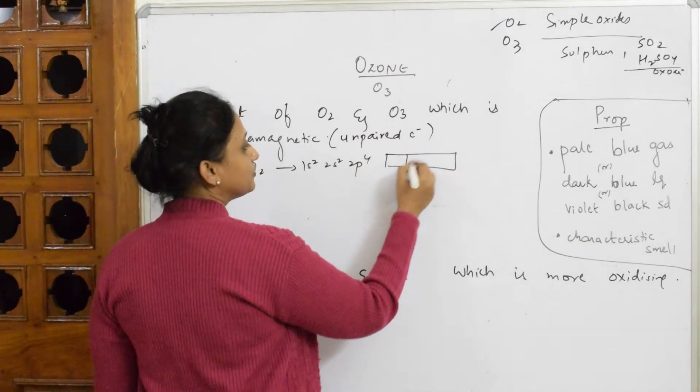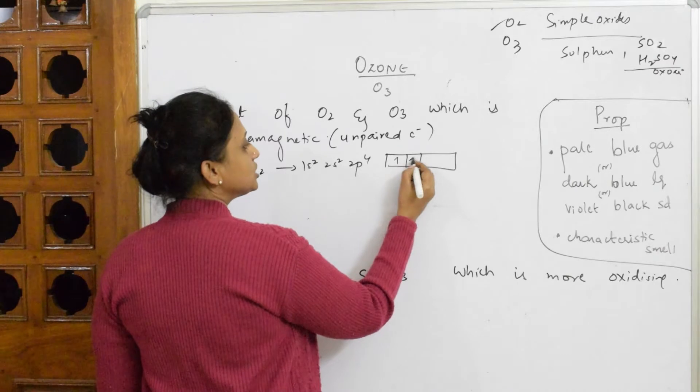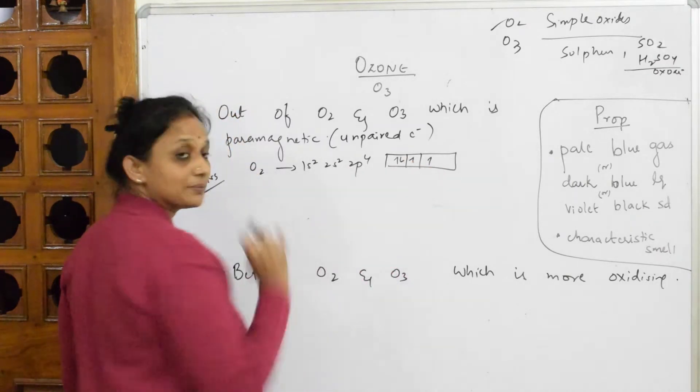So when I have to draw or fill the electrons, I'm going to Hund's rule 1, 2, 3, 4. So this is unpaired electrons.